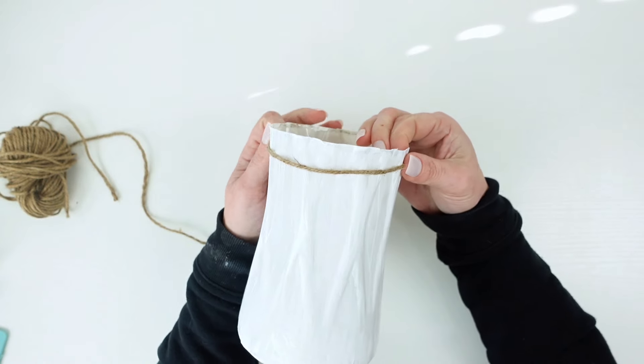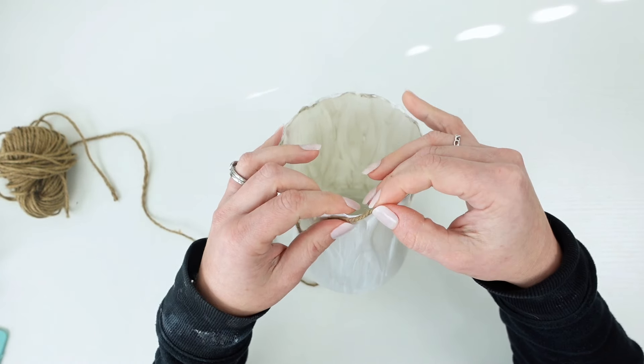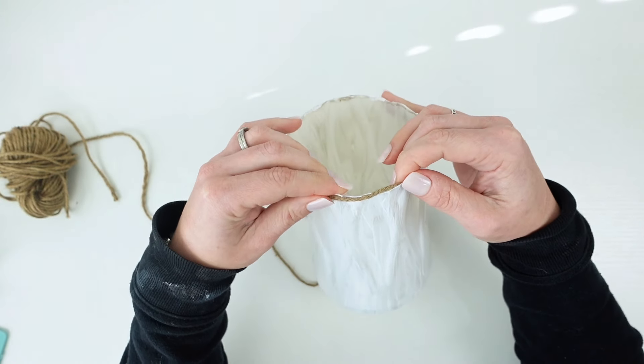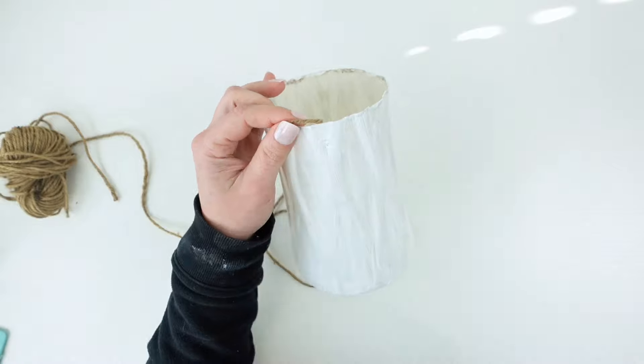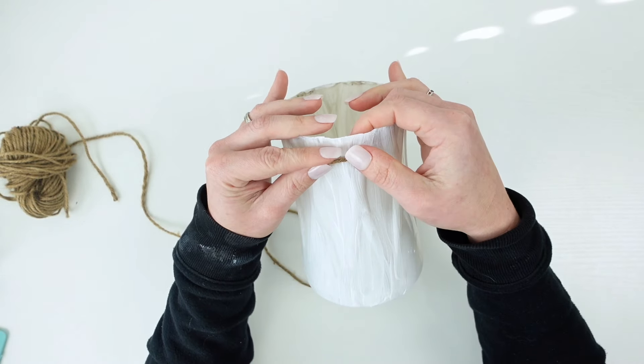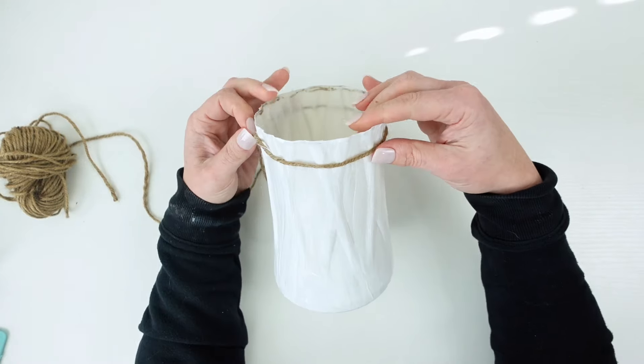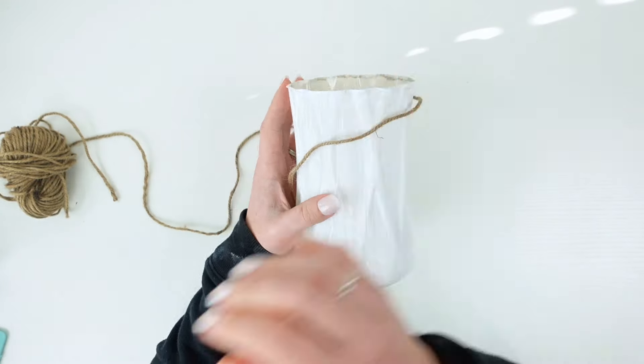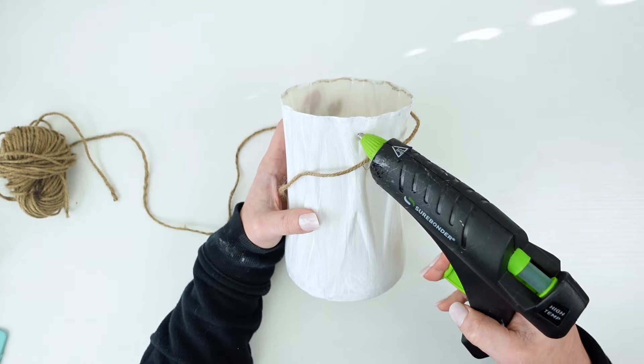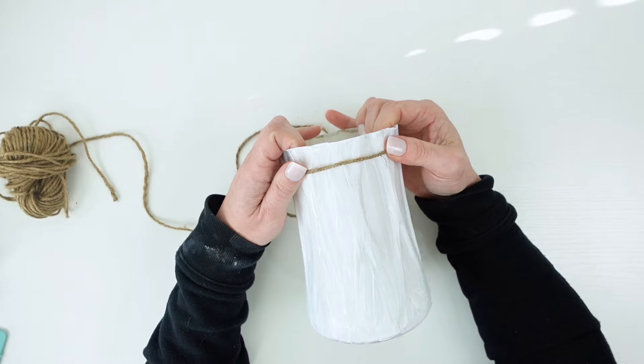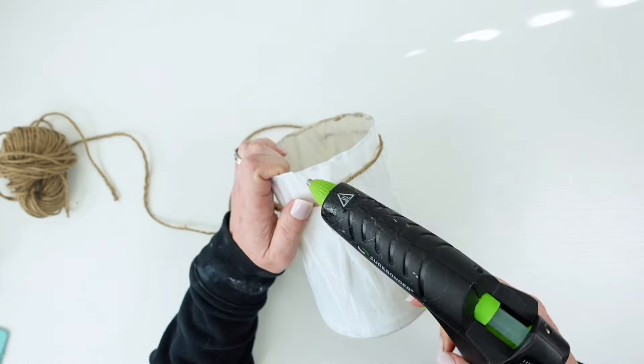After the second coat of paint had dried, I grabbed my twine and hot glue and started to add some twine to the top. So I started with a little dollop of hot glue and attached the twine and then started wrapping it around. And I used hot glue throughout to try to keep it even and also attached to the vase. So just use a little bit of glue around the top and work your way around to keep the twine even.